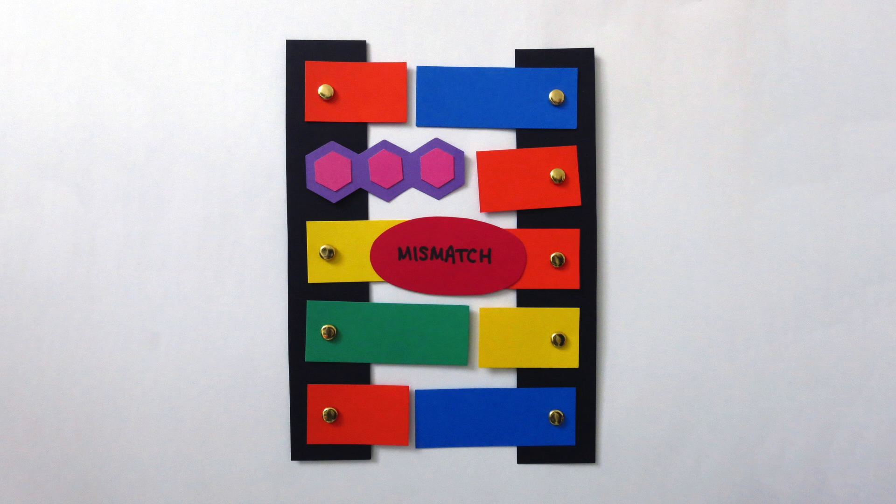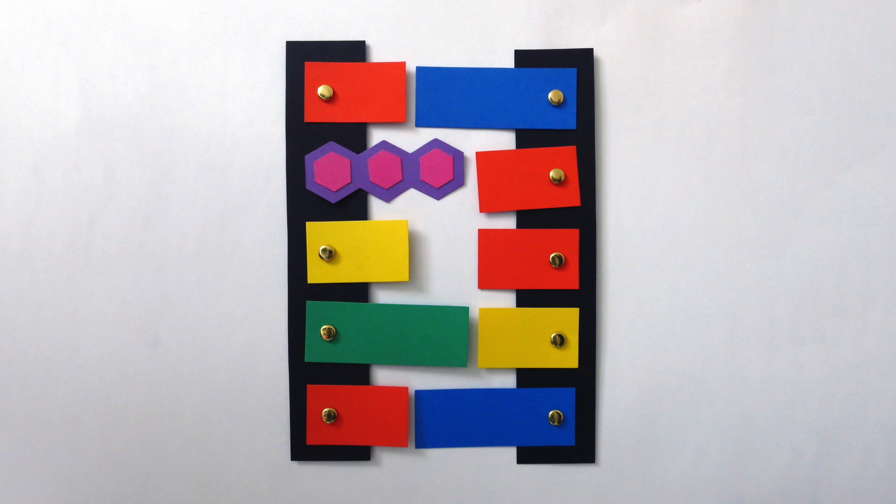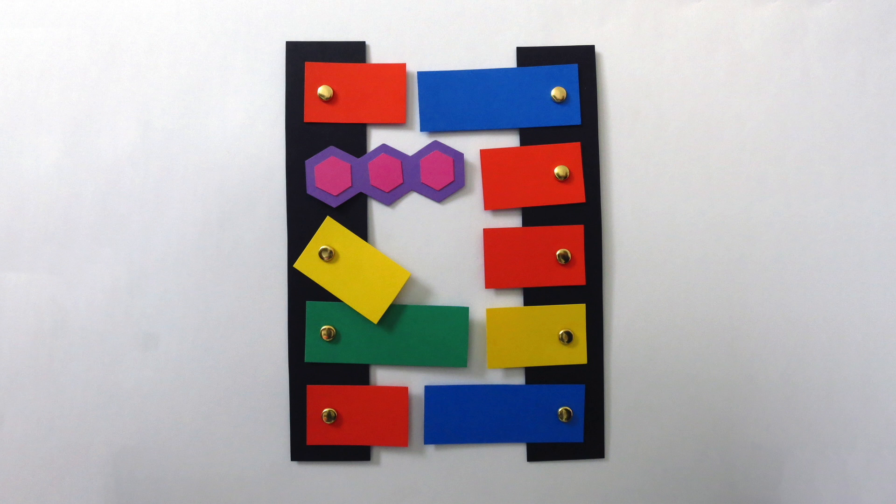However, in a double helix where there is a mismatch, the structure is disrupted. This leads to the formation of a pocket between the base pairs, in which the anthracene sits.